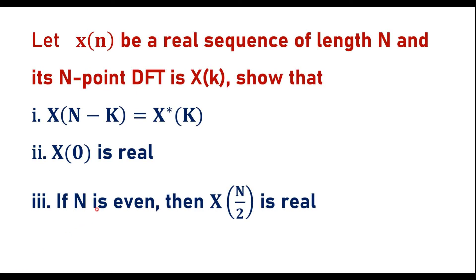In this video, let me consider one numerical on DFT. Let x of n be a real sequence of length N and its N-point DFT is X of k. Show that X of N minus k is equal to X star of k, that is the complex conjugate of X of k. Also show that X of 0 is real, and if N is even, then X of N by 2 is real.